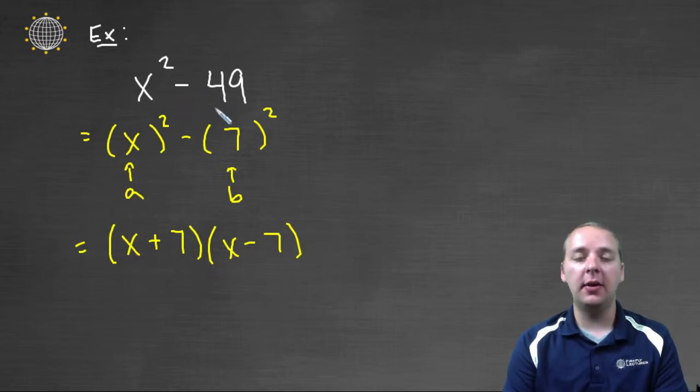Notice this could not have been factored using common factors because it didn't have any. It wasn't a trinomial, so you couldn't use trial and error, and the grouping method wouldn't have worked either. So it's good that we have this technique.